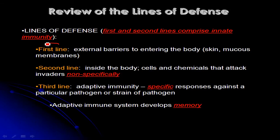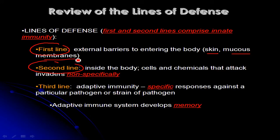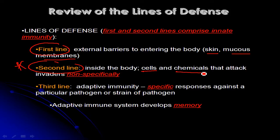We've already talked about the first and second lines of defense. The first line includes those barriers to pathogens being able to get into the body in the first place — your skin, your mucous membranes. Then once organisms breach those barriers, they very quickly have to face your second line of defense, which includes various cells like neutrophils, basophils, and macrophages, as well as various chemicals produced by cells that attack invaders non-specifically.